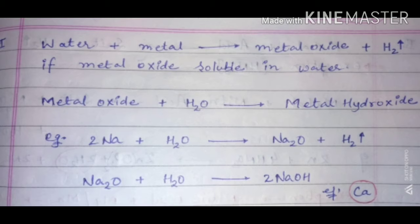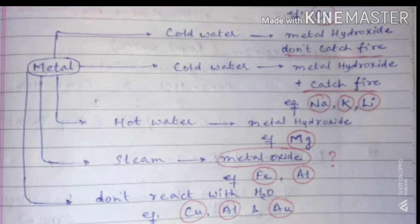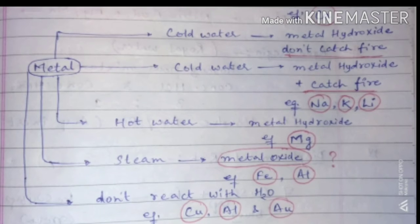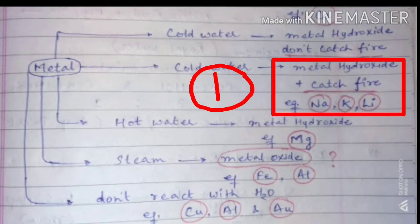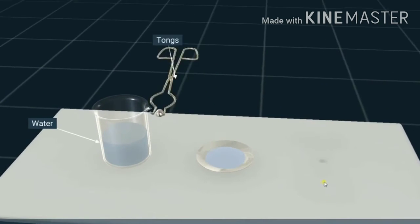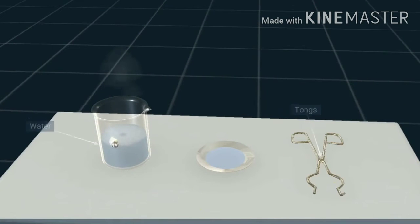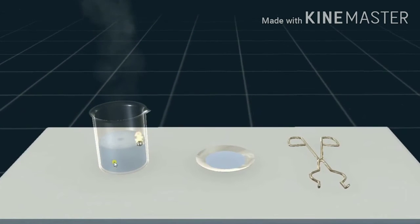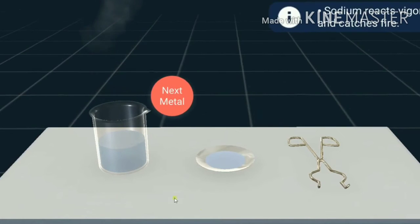On the basis of these reactions, there are a number of metals which react differently with water. The first category of metals can react with cold water and catch fire — like sodium, potassium, and lithium. These metals react with cold water and make metal hydroxide and catch fire, because they react with water very vigorously.